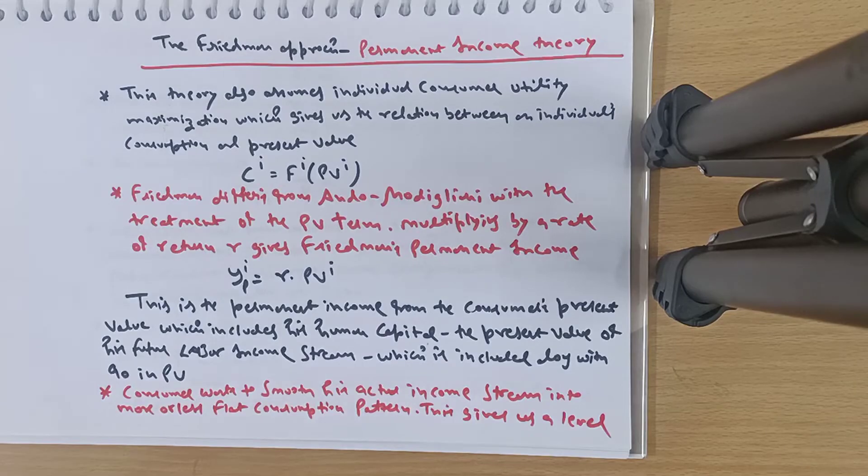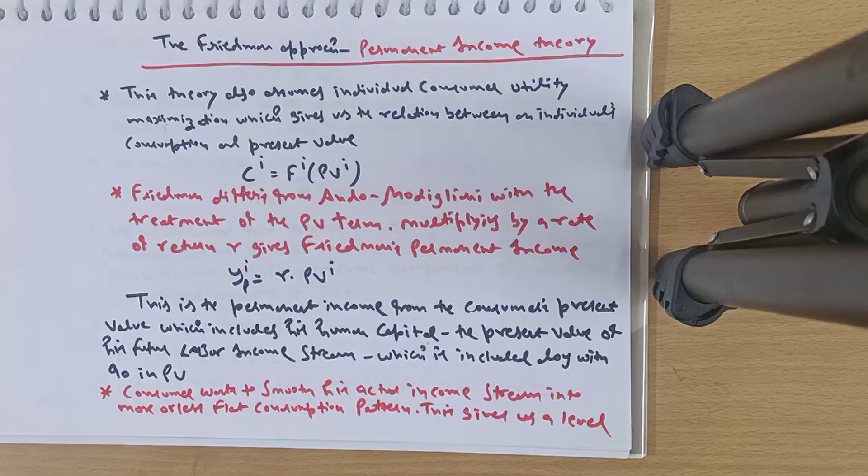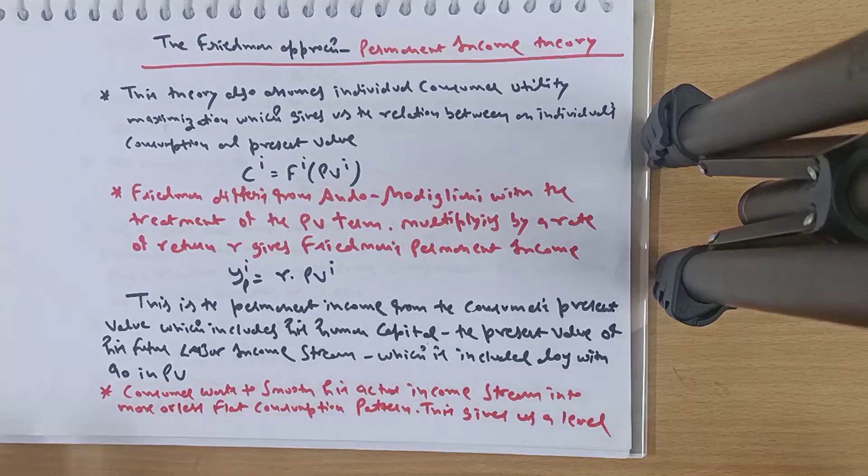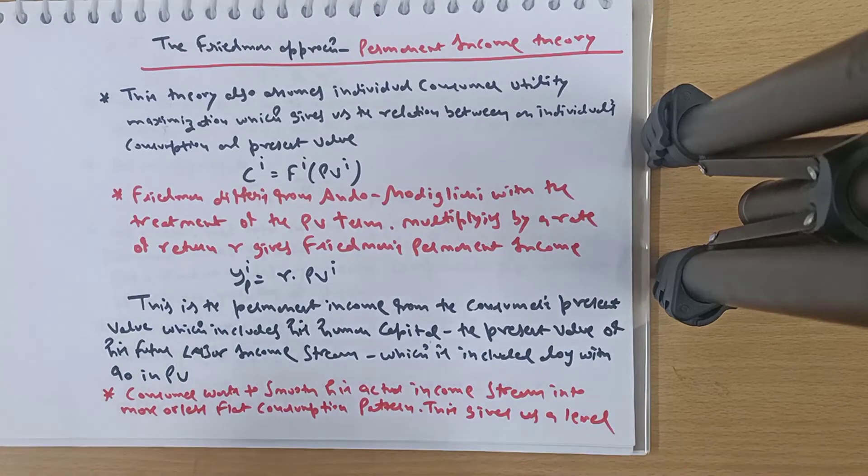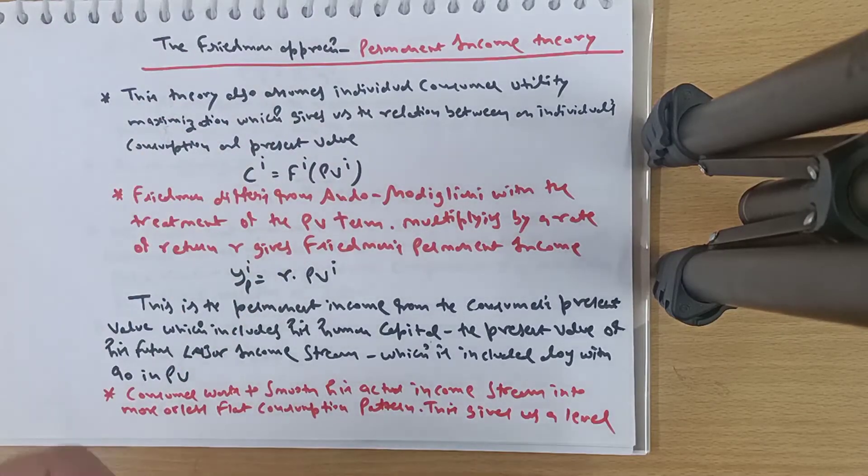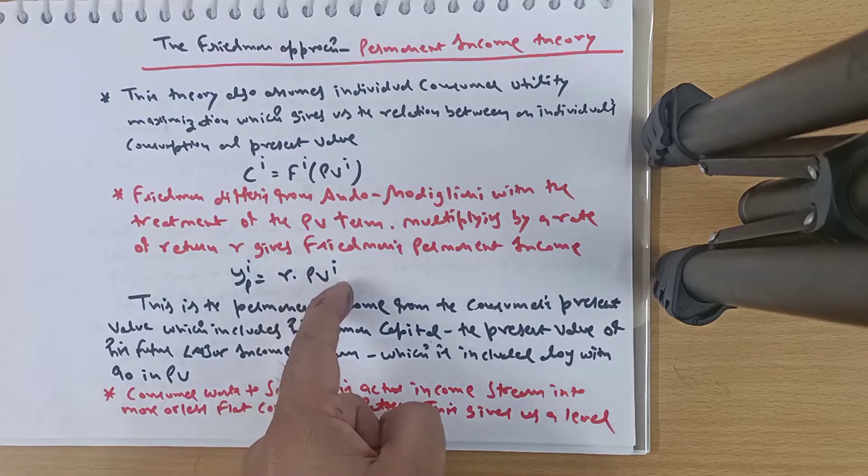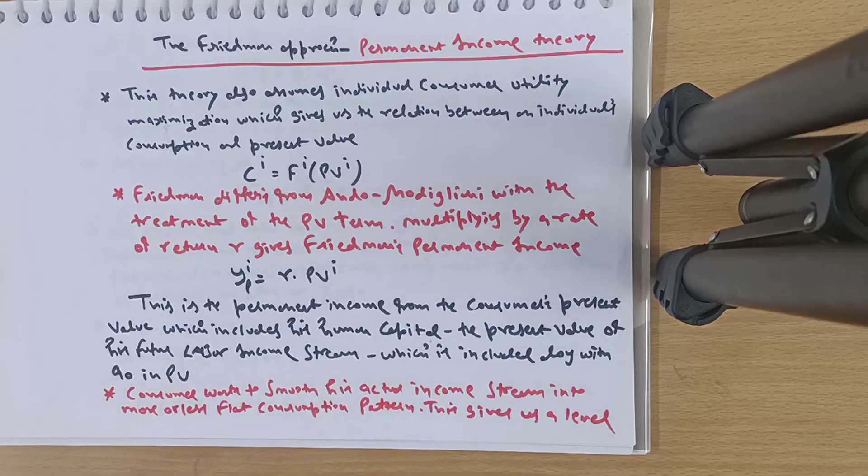Friedman differs from Ando-Modigliani in the treatment of present value. Multiplying present value by rate of return r gives Friedman's permanent income. So Friedman's approach represents it not in terms of present value, but in terms of permanent income, where permanent income equals present value multiplied by r.